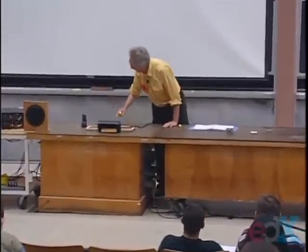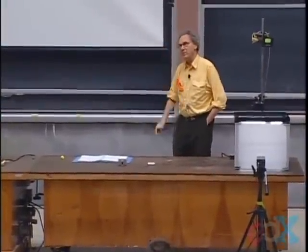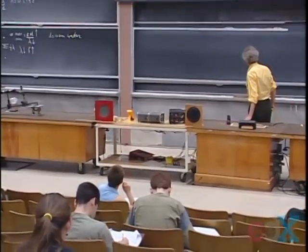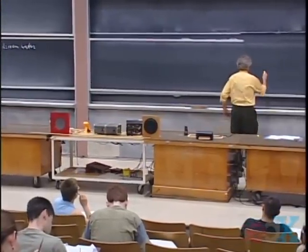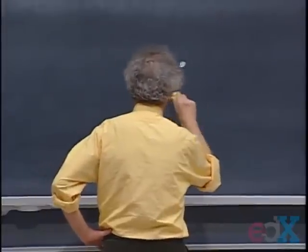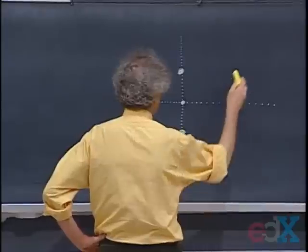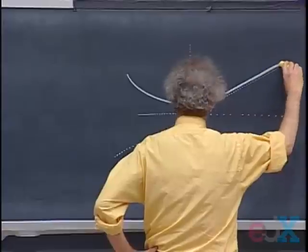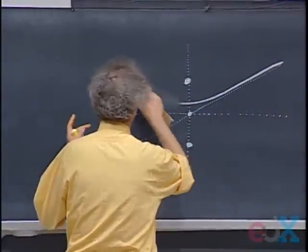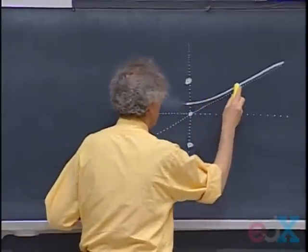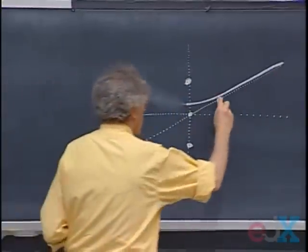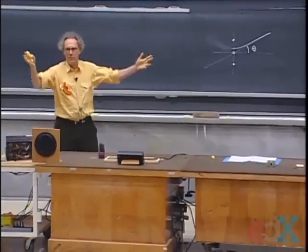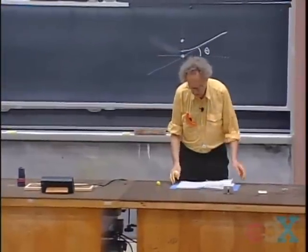If we look at the directions where we expect maxima as seen from the sources, recall that a hyperbola, far from its foci, approaches a straight line. So we can define angles theta from the center between the two sources as the directions of maxima and minima. I will now work out those directions on the blackboard.